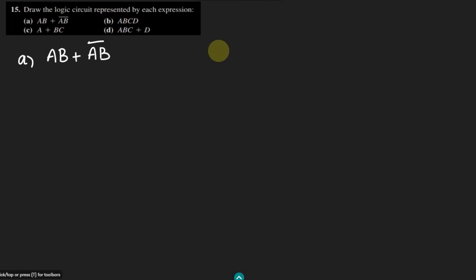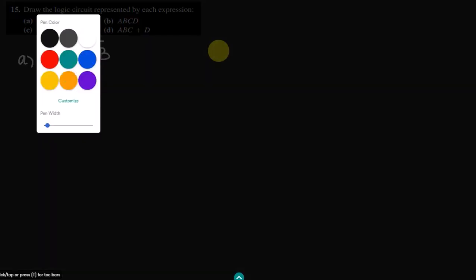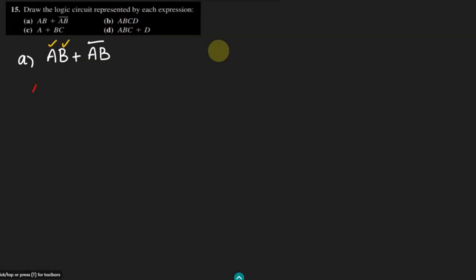We can very easily see that here only two variables are involved and those are a and b. So we have only two inputs: a and b, and the signals from them are this is a, this is b. What has been performed here is initially the product of ab and the complement of them will be added together by using this OR gate.